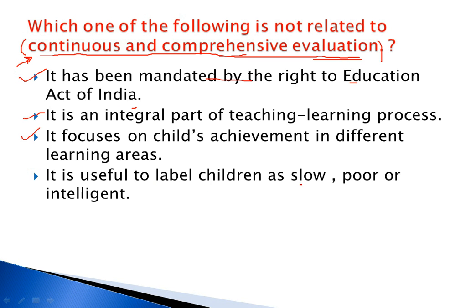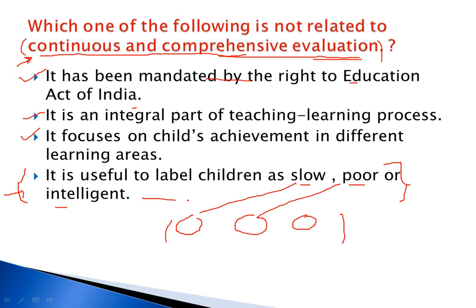The incorrect option is: it is useful to label children as slow, poor, and intelligent. This means segregating children in a class by their performance or background, which is not acceptable in progressive or inclusive education. CCE is meant to eradicate such labeling practices. So the correct answer — the option not related to CCE — is labeling children as slow, poor, or intelligent.